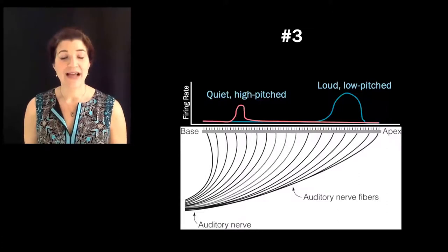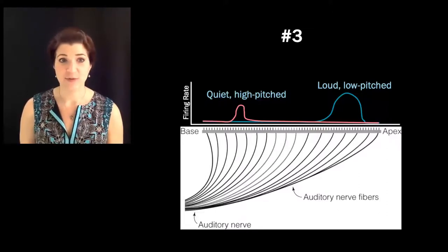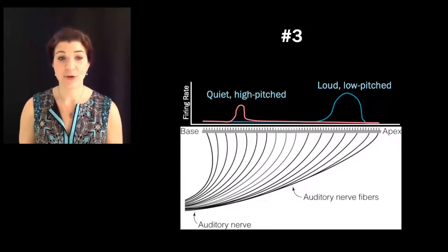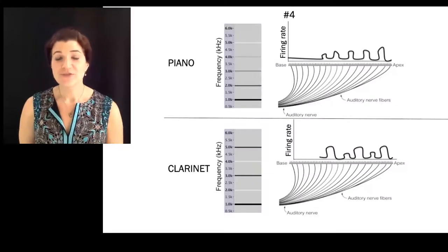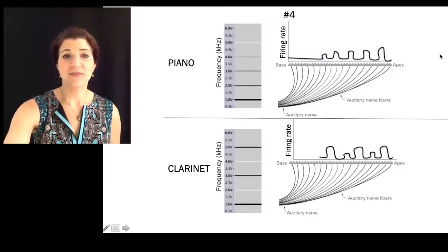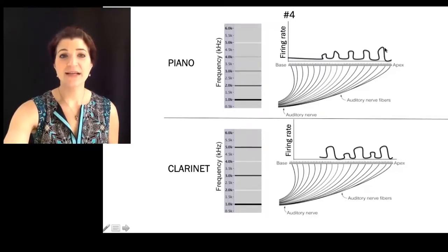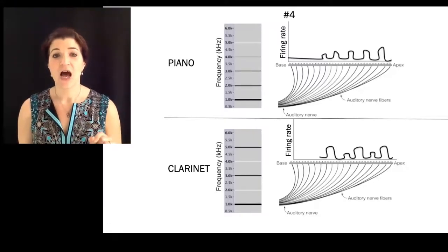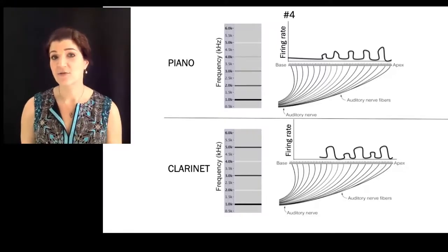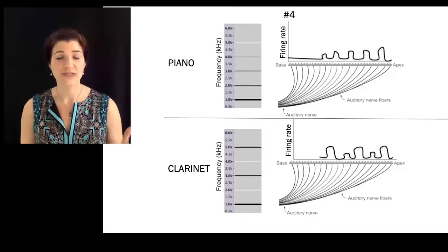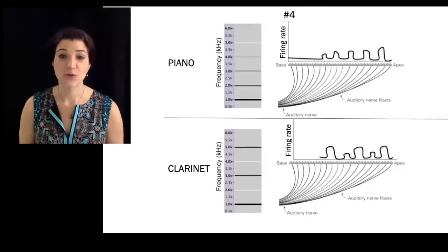A quiet, high-pitched sound will activate a narrow band near the base of the basilar membrane, whereas a loud, low-pitched sound will activate a wider band near the apex. For piano, the lowest frequencies are the loudest and get gradually quieter, so the activation is highest at the apex, and for each harmonic gets slightly narrower and more finely tuned. For the clarinet, the fundamental frequency, the third harmonic, and the fifth harmonic are loud, whereas the second and fourth are relatively quiet — meaning the areas of the basilar membrane corresponding to those quieter harmonics will have lower and more finely tuned firing rates.